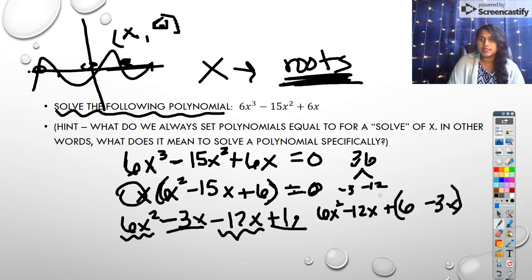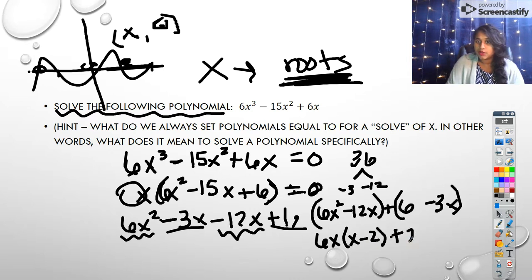So that becomes 6x squared minus 12x plus 6 minus 3x. And I can see this as a grouped form, and this is a grouped form. And so I can pull out a 6x here, and that becomes x minus 2. And I can pull out just a 3 over here, I want to pull out a 3, and that becomes 2 minus x.